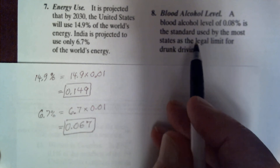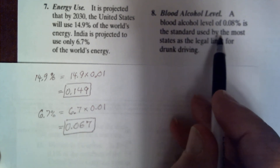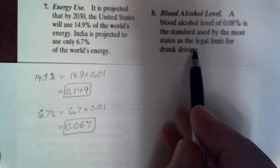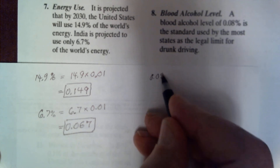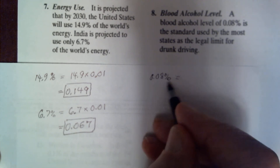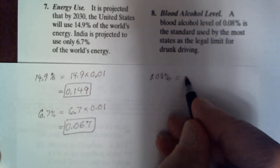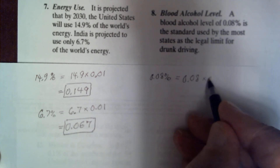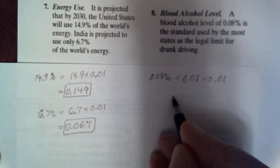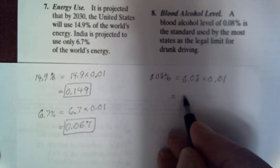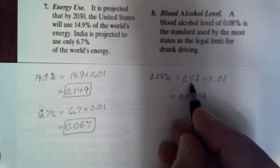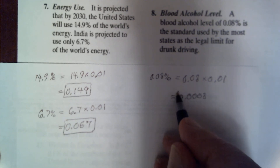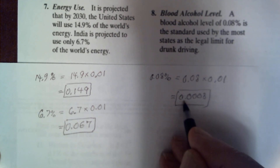For blood alcohol level: a level of 0.08 percent is the legal limit for drunk driving in most states. To convert, replace the percent symbol with 0.01: 0.08 times 0.01 means moving the decimal two places to the left, giving 0.0008.